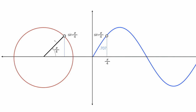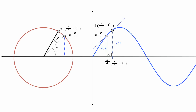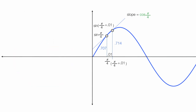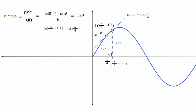I'm going to rotate this line just a little bit — 0.01 radians. I have sine pi fourths plus 0.01 in both places, and this new height is equal to 0.714. The slope is going to be cosine pi fourths. The slope equals sine of pi fourths plus 0.01 minus sine of pi fourths, divided by h, which is 0.01. This is equal to 0.714 minus 0.707 divided by 0.01, and this is equal to 0.707. So it worked out perfectly.